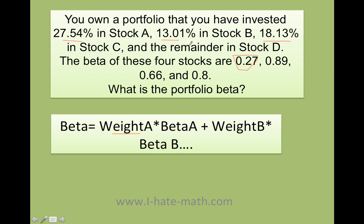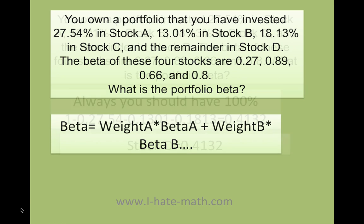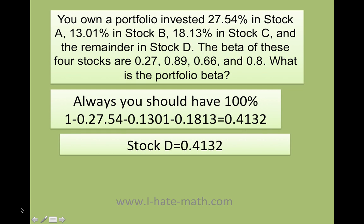Now, before we start, I don't have a weight for stock D, so I need to figure out how much I invested in stock D. You should always have 100% on your investment — you have 27% in one, 13% in another, 18% in C. So how much did you invest in D? You do 1 minus all the other percentages, so the remainder — stock D — is going to be 0.4132.